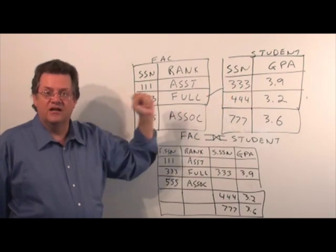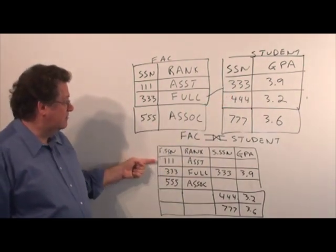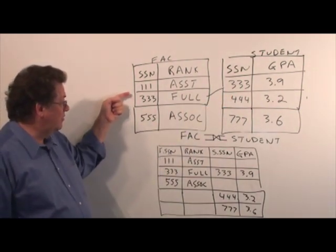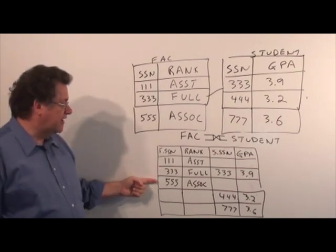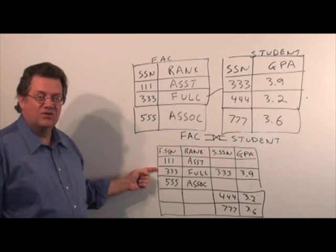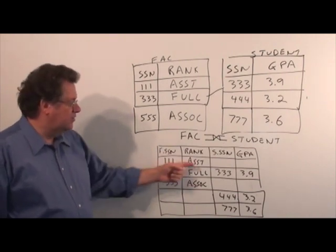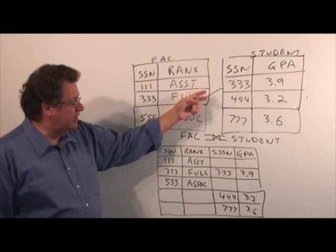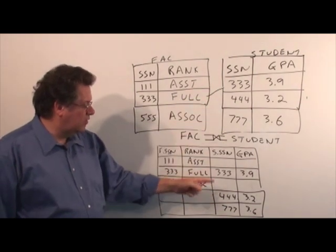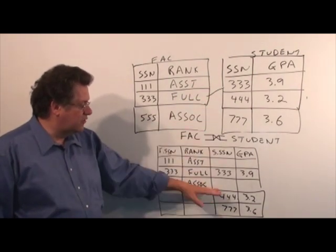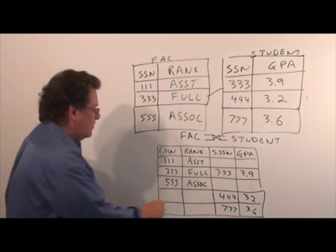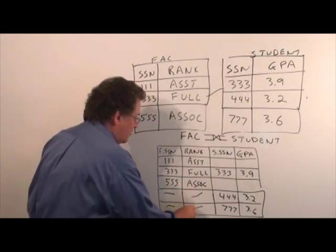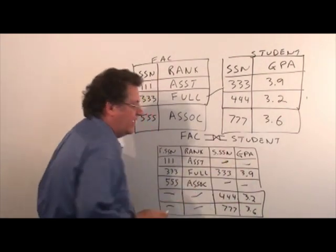What we see is the rows 111, 333, 555 from faculty. We matched on the 333 which we see there, and over here we have 333, 444, 777. So we retained all the rows from the student, and what we would end up doing is putting null values in wherever they have nothing in common. So that's the full outer join.